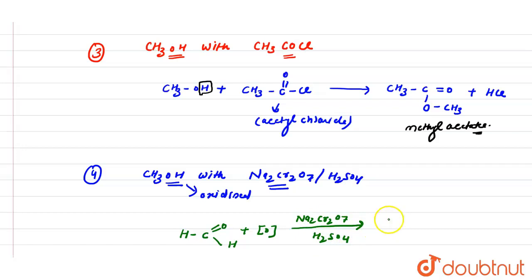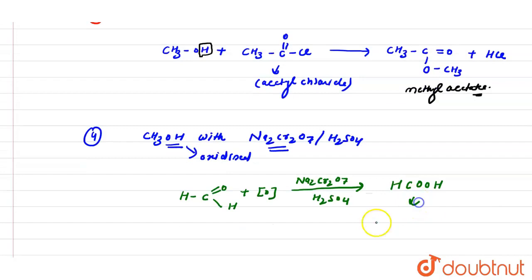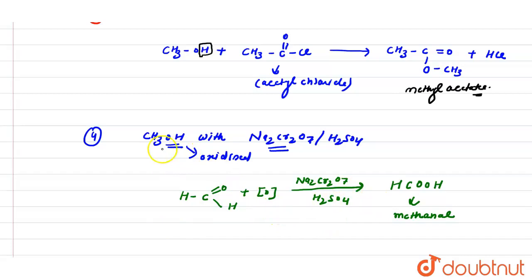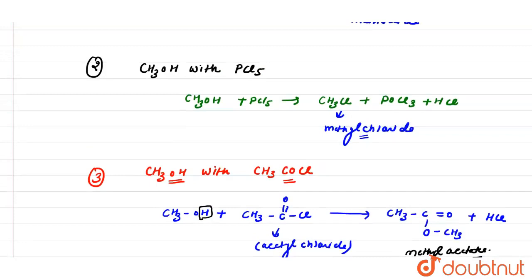The product formed is methanal (HCHO), also called formaldehyde. The oxidation of alcohol to an aldehyde is indicated by a color change of the dichromate solution, as it is reduced from orange to the green color of chromium(III) ions. So all the reactions are done — this is the answer.